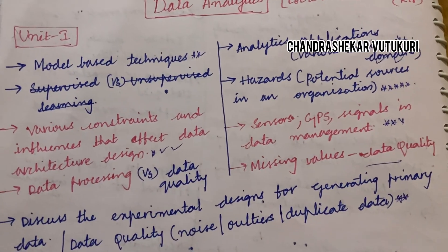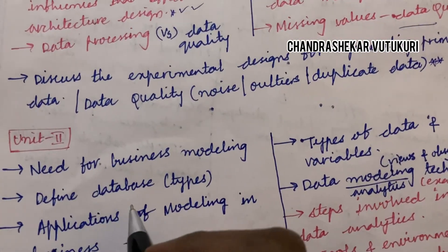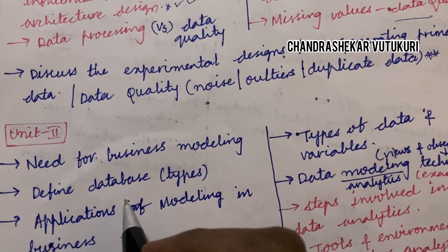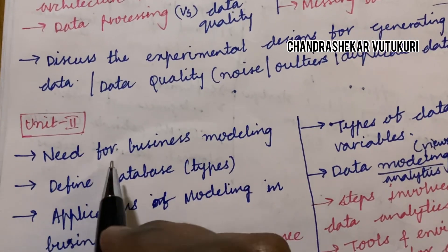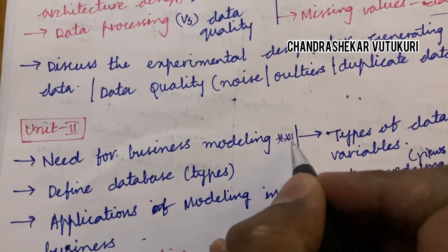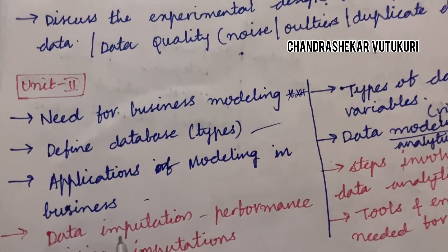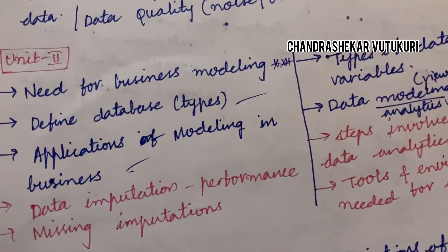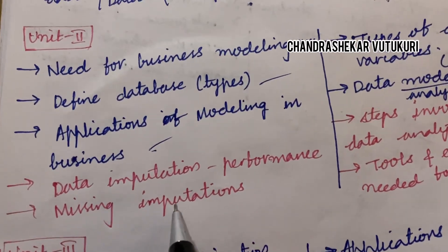Students, as this course is all about theory, you are supposed to work out very neatly in point-wise format and do not write your exam in paragraphs. The second unit is all about the need for business modeling — that is said to be a top most question. Define database is a two-mark question. Applications of modeling in business may also be a two-mark question. Database data imputation and performance is said to be a long question this time.